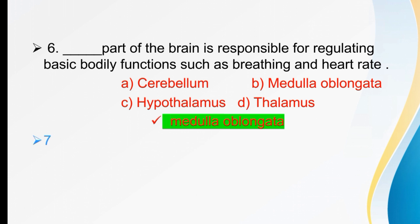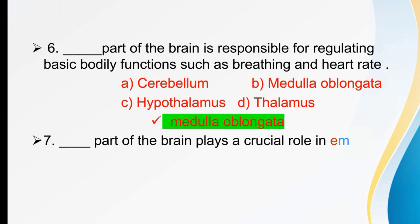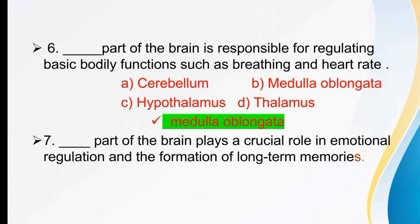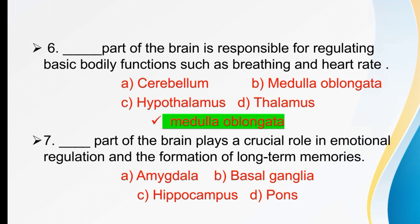Which part of the brain plays a crucial role in emotional regulation and formation of long-term memories? Options are amygdala, basal ganglia, hippocampus, or pons. The right option is amygdala — it is the part of the brain which plays a crucial role in emotional regulation and formation of long-term memories.